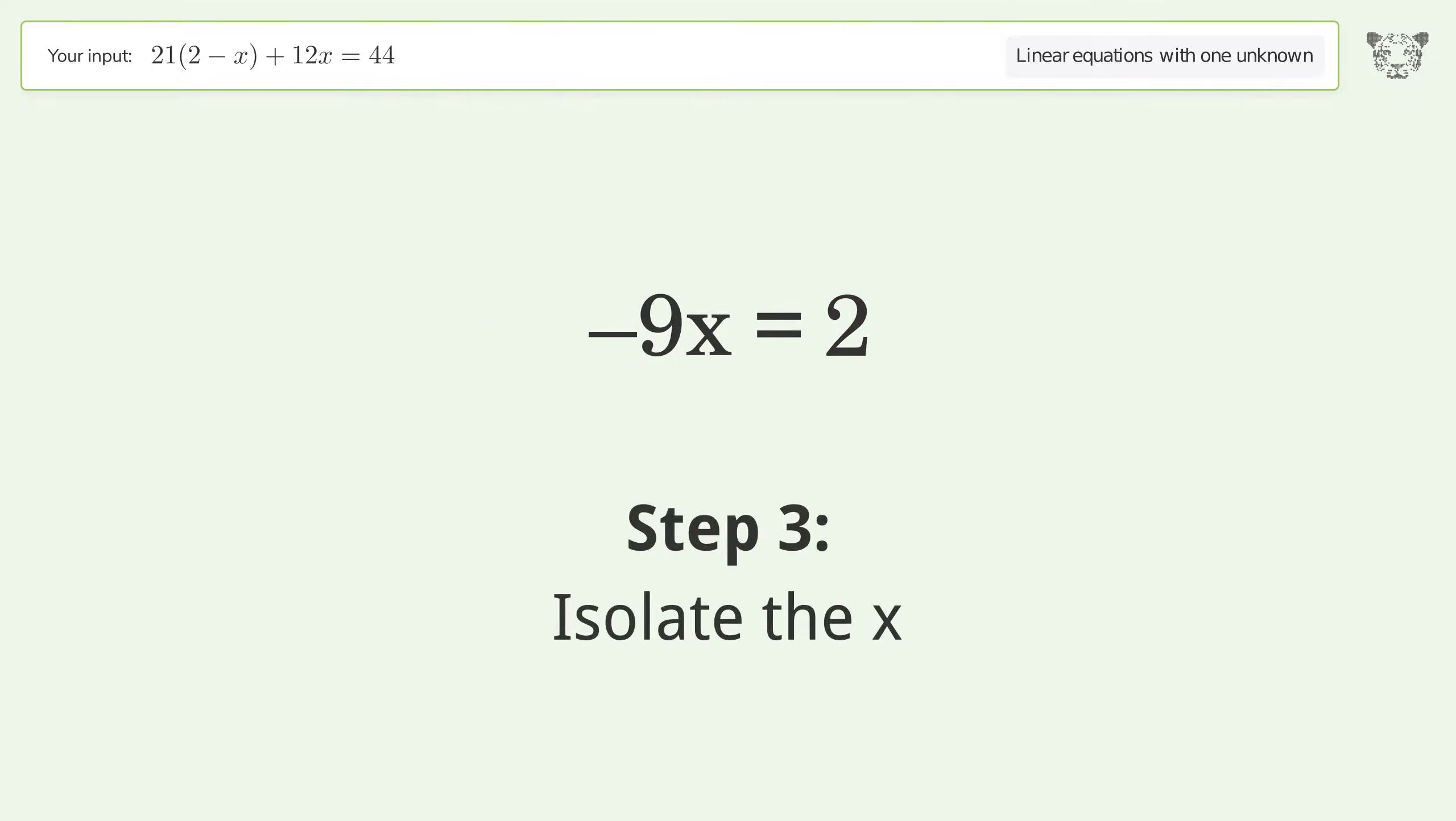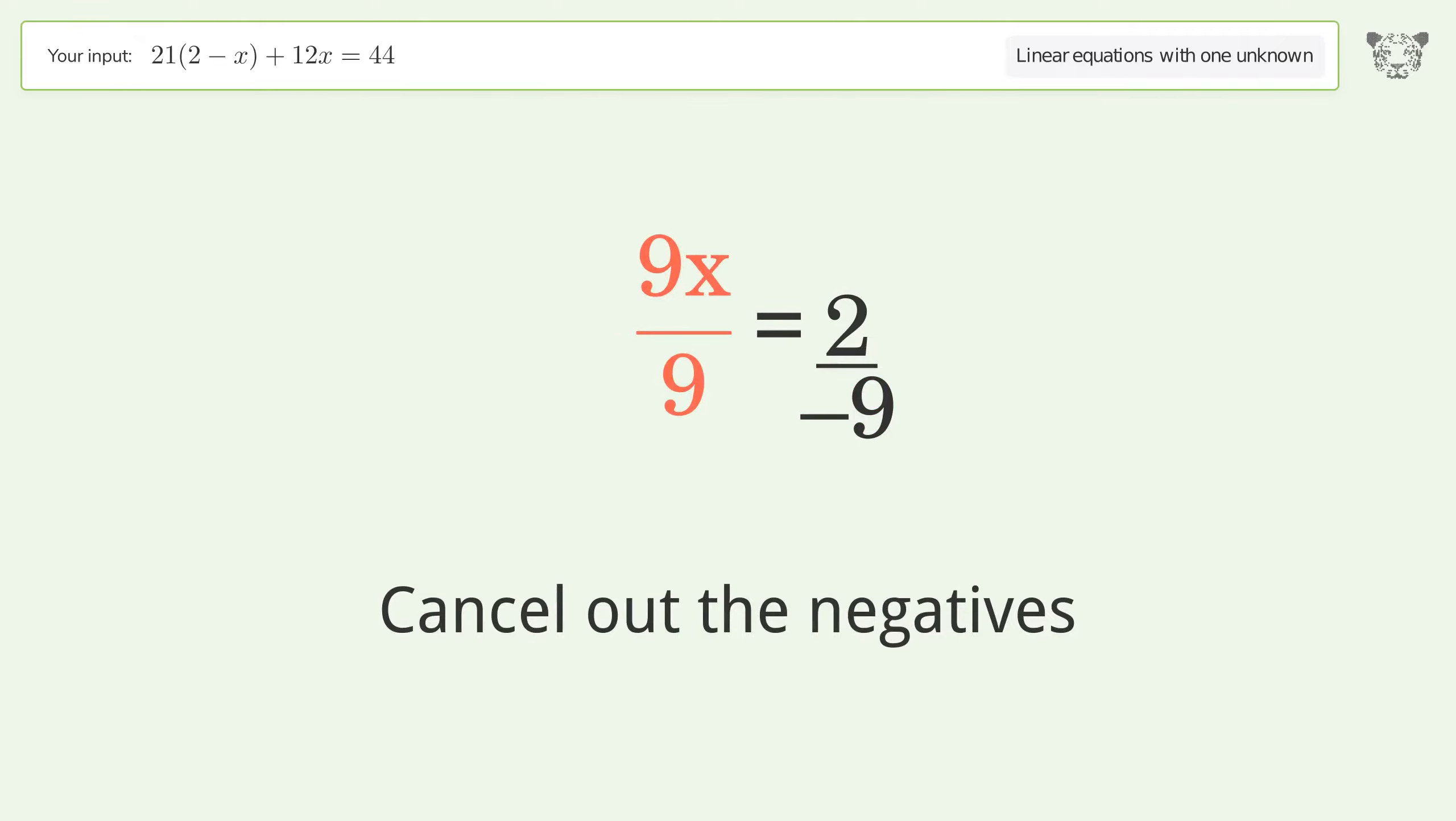Isolate the x. Divide both sides by negative 9. Cancel out the negatives. Simplify the fraction. Simplify the arithmetic.